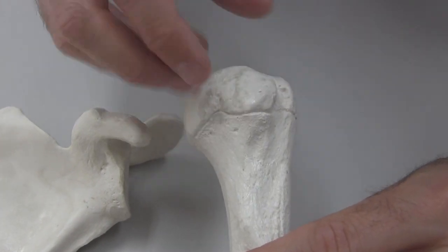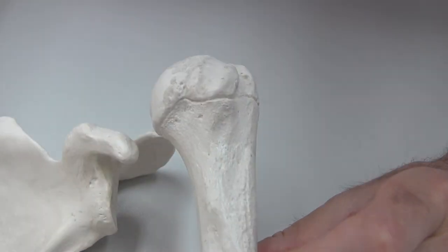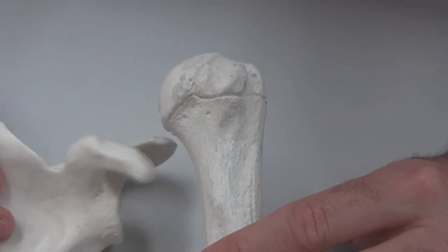We know this is the head of the humerus because it's got this narrow neck section, which is actually also the most frequently fractured area of the humerus.